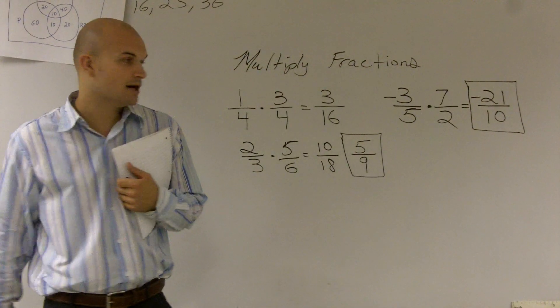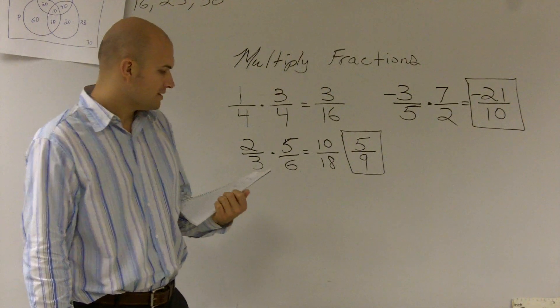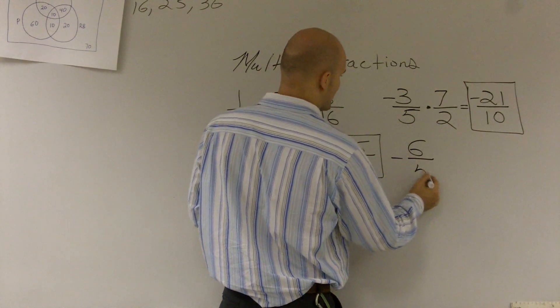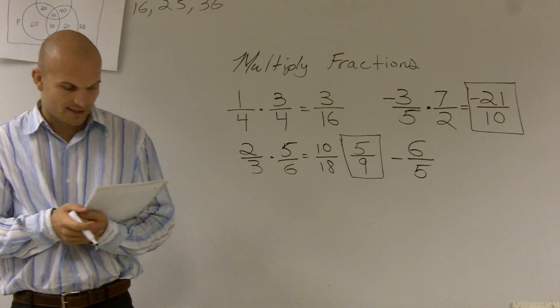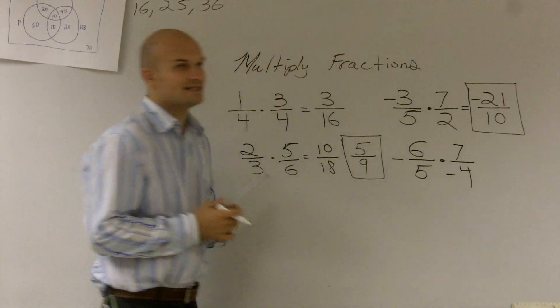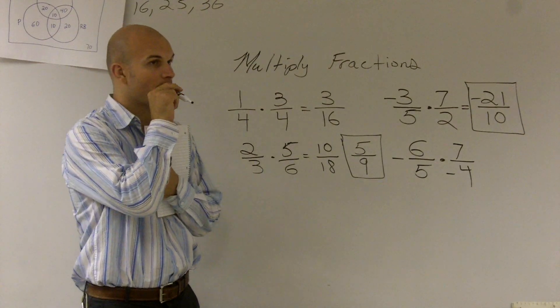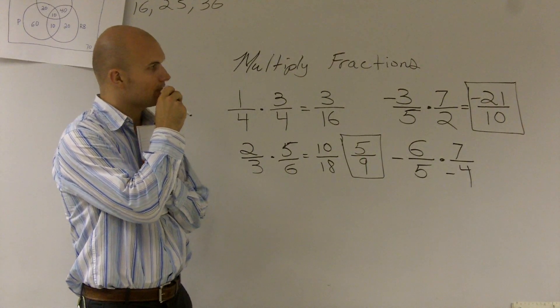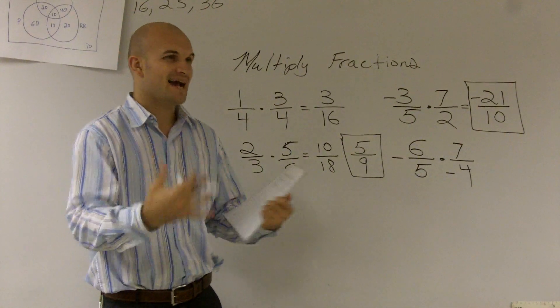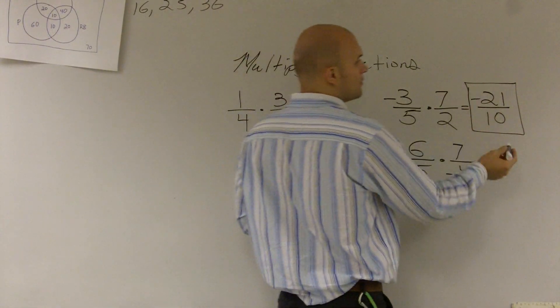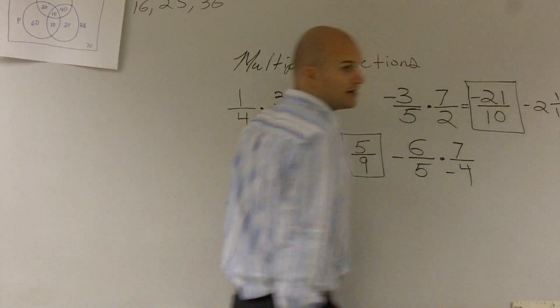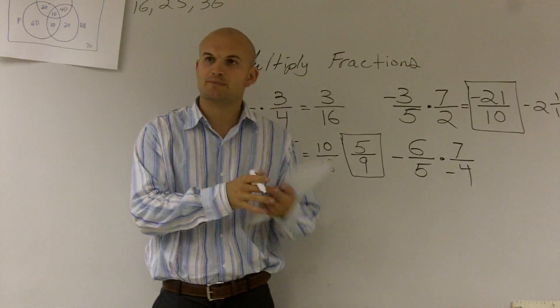Therefore, it is left as -21/10. The next problem I'd like to go over is— Student: On the 21 over 10, can't you turn into a mixed number? Yes, you can. Again, I'm not going to deal with mixed numbers because I'm going to want your answers as improper fractions, and they're easier to use as improper fractions. But yes, if you wanted to write it as a mixed number, you can write it like that as well. But for this class, we're always going to be dealing with improper fractions.